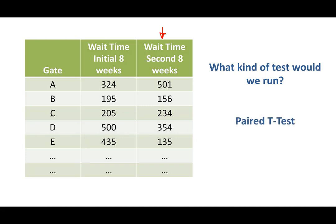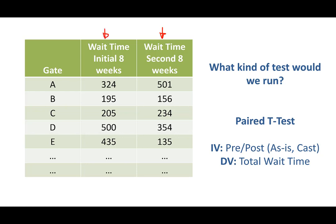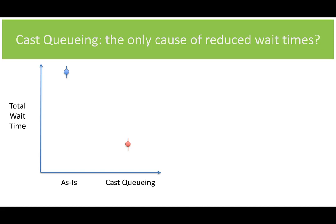What kind of test would you run in this case? We have eight experimental units — our eight gates — and we're measuring them twice. If you said paired t-test, you're right on. In this case in particular, our dependent variable is the total wait time, and our independent variable is represented by our two columns: the as-is pre, the change, and then the post, which is when we had the cast queuing in place. Sounds great — we've reduced wait times. Congratulations.